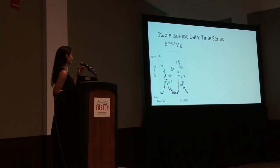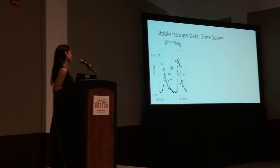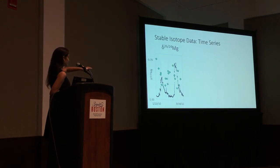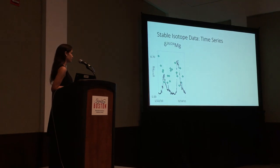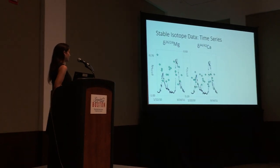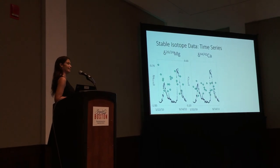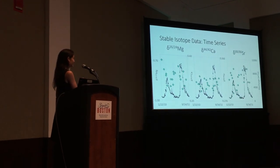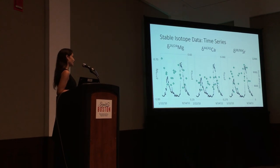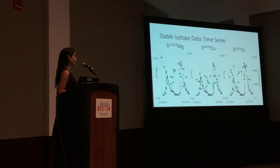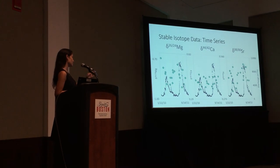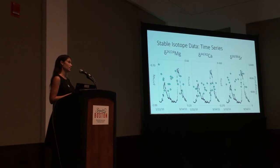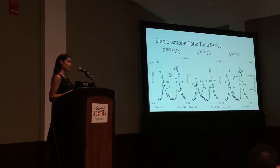Jumping right in to stable isotopes. We have the same dates on the x-axis and stable magnesium isotopes on the y-axis. You can see that we do have some seasonality, albeit not quite as clear as the radiogenic strontium signature. Then we have the calcium isotope values—similarly to the potassium isotope talk we just heard—not really any obvious seasonality showing up. And then we have the stable strontium story, where while the seasonality is not quite as stark as its radiogenic counterpart, you can see that there is some.